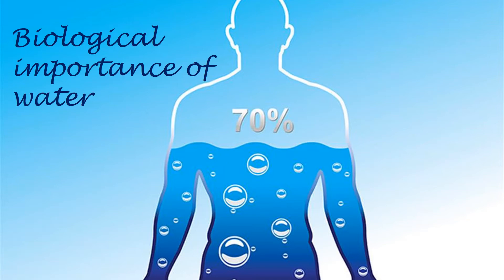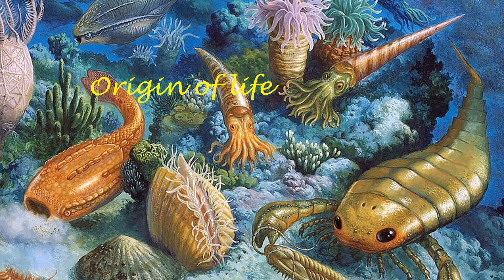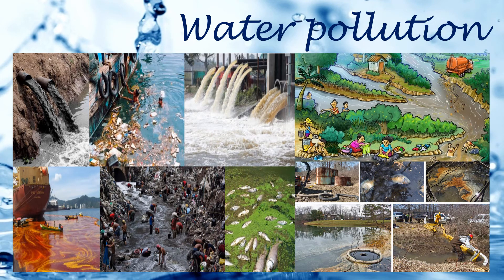Now let us learn a few biological importances of water. Plants and animals have 70 percent of water in their body. Water is essential for biological activities of plants and animals. Water is required for the growth of plants. Green plants need water for the production of their food. The first living being was originated under water.